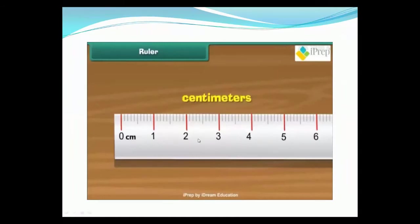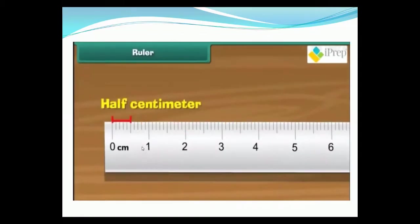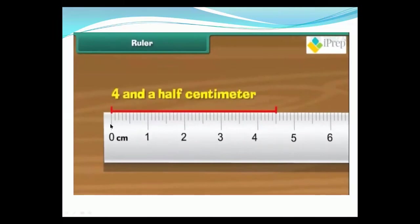This is a ruler. We use a ruler to measure smaller objects. You can see there are many divisions on it — some lines are smaller, some are larger. The larger lines show the number of centimeters: 0, 1, 2 centimeters, and so on. There are also small lines between two larger lines — these small lines show the divisions of centimeters. Now we will read the scale. This point is the half centimeter. The distance shown here is two centimeters, and the scale here shows four and a half centimeters.